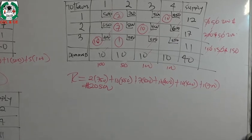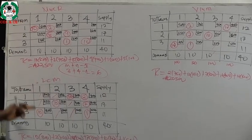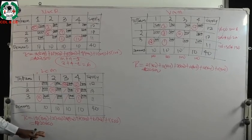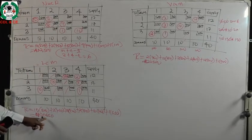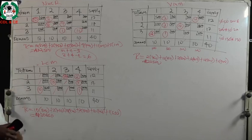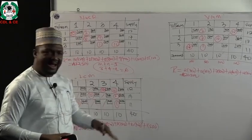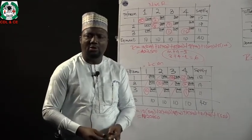Comparing the three results: the northwest corner rule gives 22,500; the least cost method gives 20,650, reducing cost from 22,500; and VAM reduces it further to 20,500. The more we move from northwest corner to least cost to VAM, the lesser the cost. In our next session on optimal solutions, we normally begin from the northwest corner rule and improve, but a smart student can compute VAM first and begin improvement from there to get closer to the optimal solution.